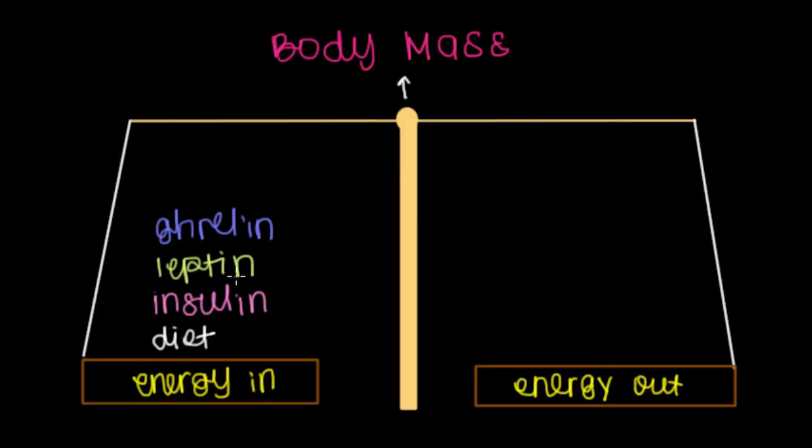These three hormones help regulate whether the energy or the food that we've just consumed is stored, or if we just let it pass through and become waste that we get rid of.